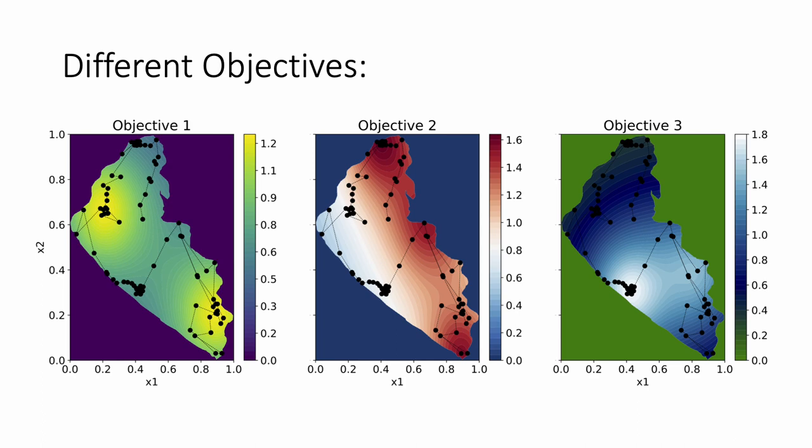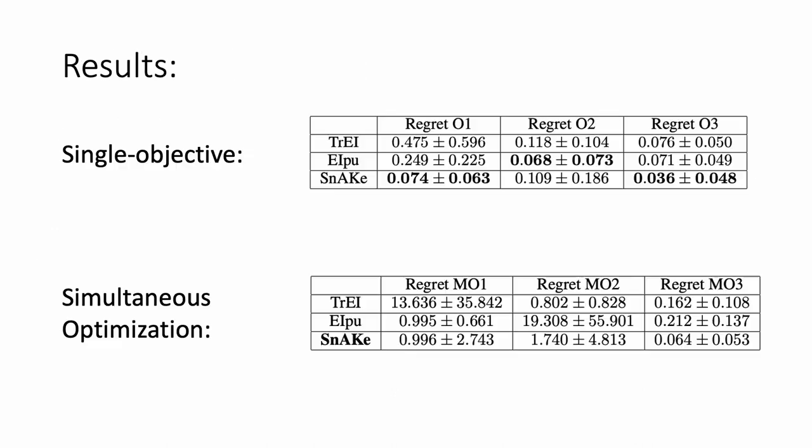In this paper, we explain how SNAKE can be adapted to optimize all objectives simultaneously, and here we show a SNAKE path that goes through the optimum on all three objectives. In the single objective case, we are the best performer in two out of three benchmarks. In the simultaneous optimization experiment, we are the only method consistently finding all three optima.